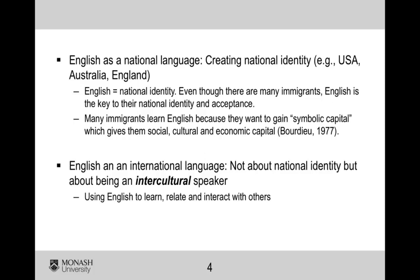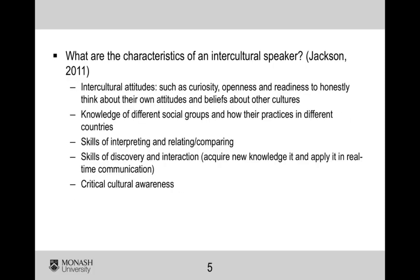If you look at English as a national language versus English as an international language, it does have status — you can be an English speaker in China and have quite a bit of status because you speak another language, and English can help you gain social, cultural, and economic capital. But primarily because it is a tool to be able to access other people. The big thing about English as an international language is that it's about being an intercultural speaker — the idea that you use English to learn, relate, and interact with others. English as an international language is not about national identity; it's a tool to bridge across a variety of people and countries.